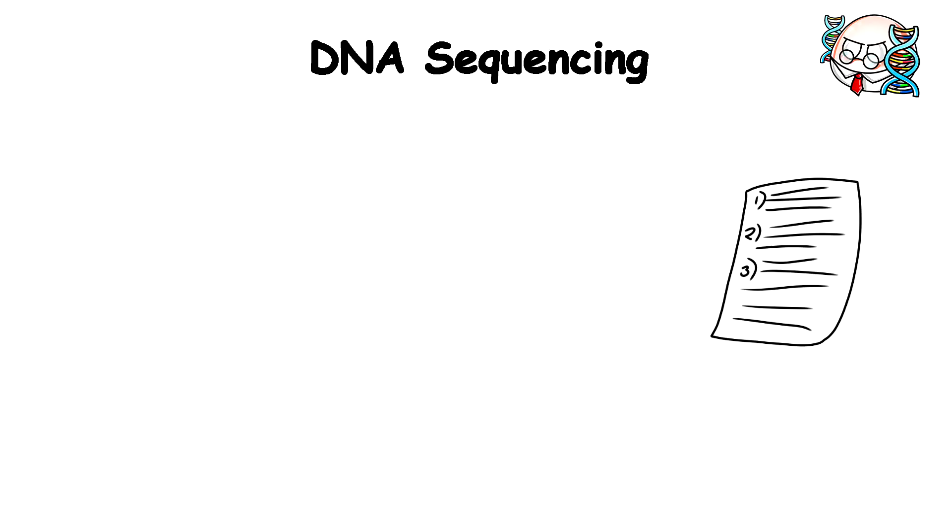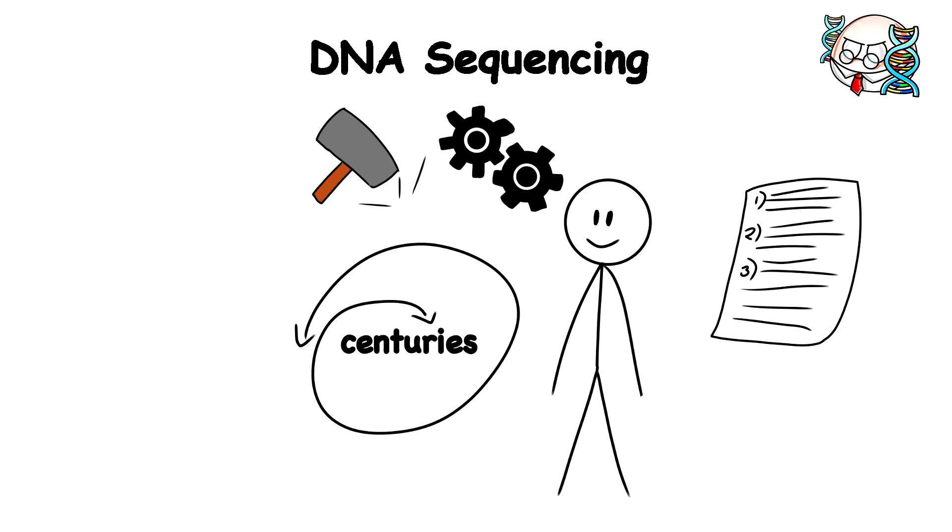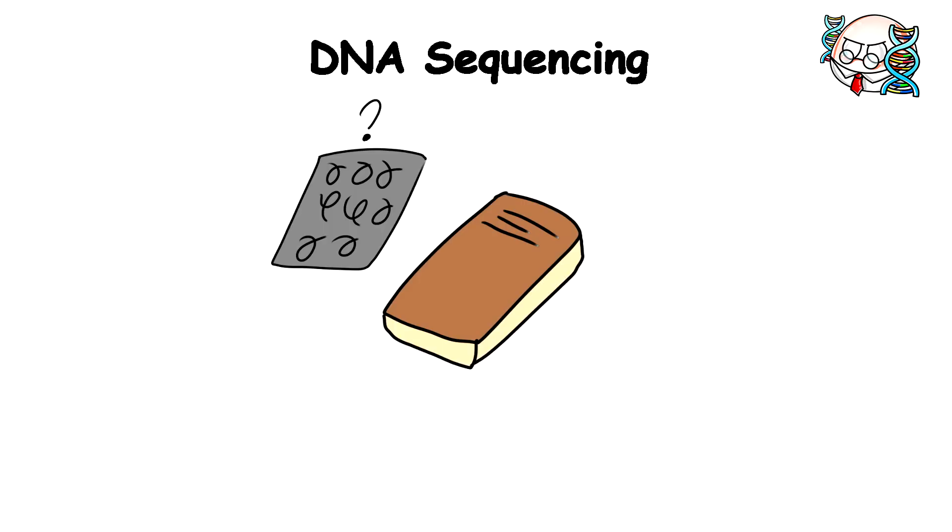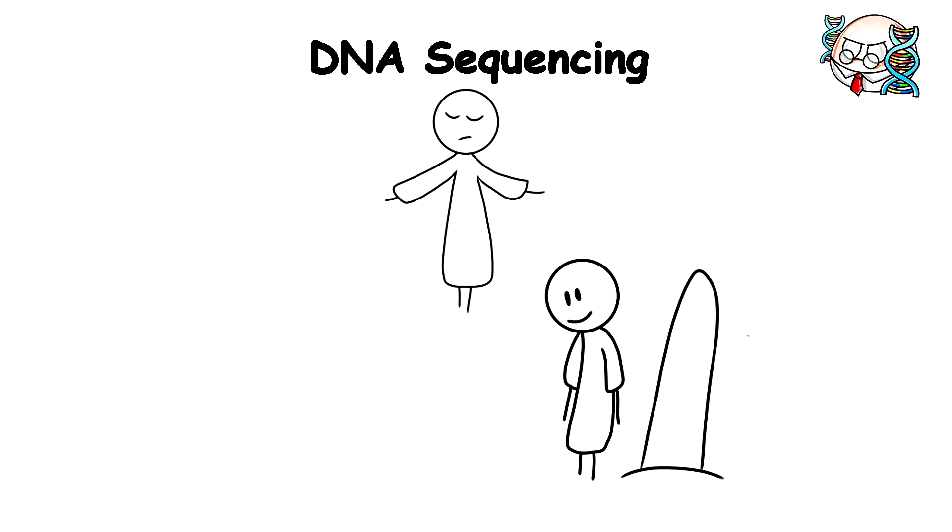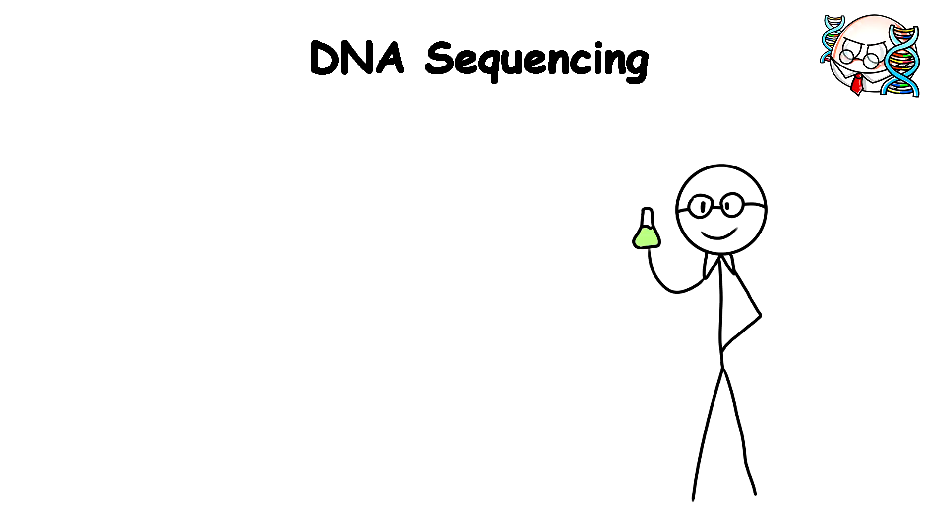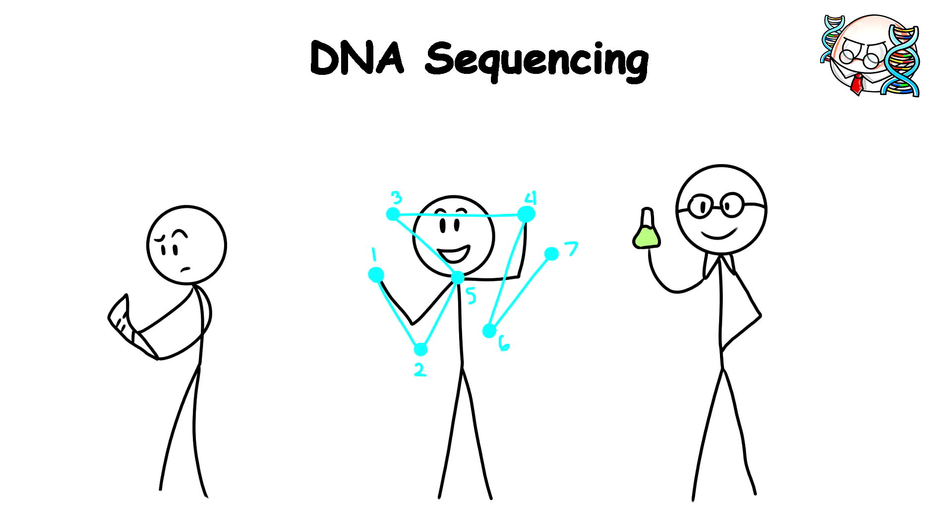DNA Sequencing. The instructions for how living things are built and functioned for centuries remained a total mystery, like a book written in an unknown language. God had apparently hidden how he made things the way they are behind billions of proteins we couldn't read. But in the late 1900s, scientists finally cracked the code and learned to read those instructions through DNA sequencing.